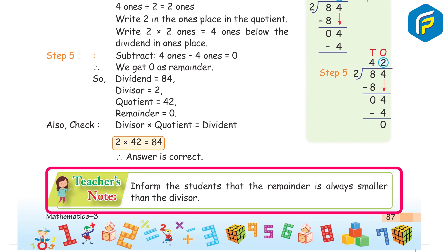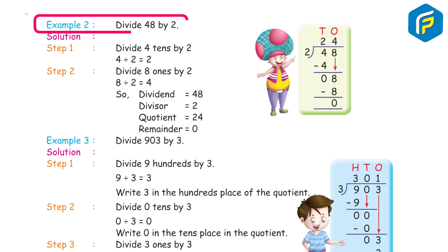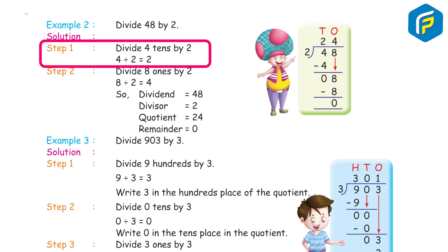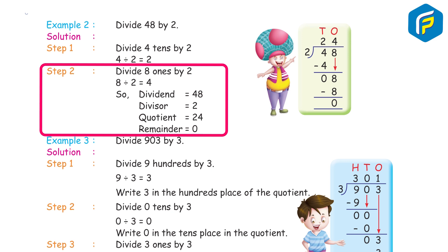Teacher's note: inform students that the remainder is always smaller than the divisor. Example 2: Divide 48 by 2. Step 1: Divide 4 tens by 2 — 4 ÷ 2 = 2. Step 2: Divide 8 ones by 2 — 8 ÷ 2 = 4. So, dividend 48 ÷ divisor 2 = quotient 24, remainder 0.